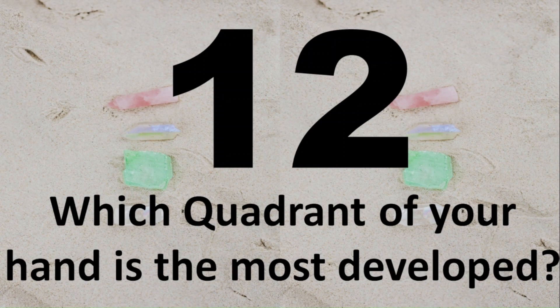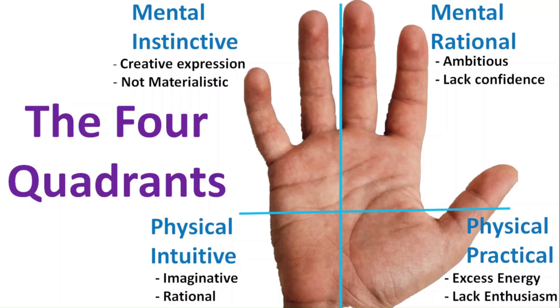Number 12, which quadrant of your hand is most developed and what does it mean? Splitting the hand into four sections, vertically between the middle and ring finger, and horizontally across from where the thumb connects to the palm. We have the four quadrants. Look to see if any of the quadrants is more or less developed than others.